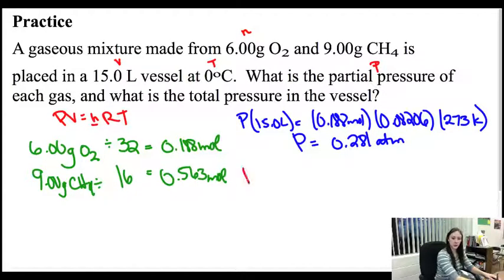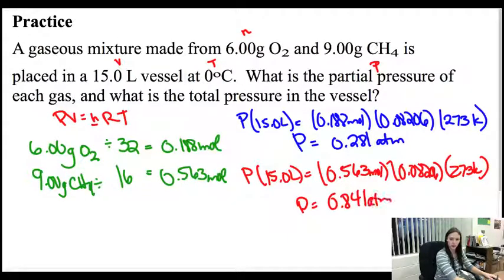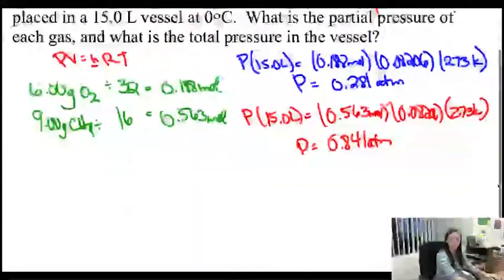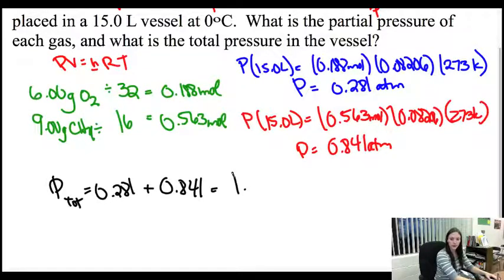The same thing for my CH4. My pressure, my volume is the same. I get my moles here, and then the mole number changes. I've got my R and I've got the T. I multiply and then divide by 15. My pressure is 0.841 atm. So that's the partial pressure of each gas, just each one individually. And the total, you just add them together. So don't make these harder than what they are. Take 0.281 plus 0.841.